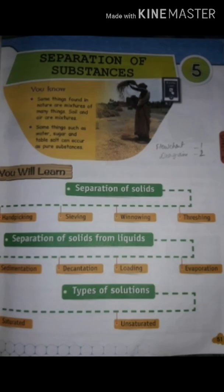Now let's start with our new chapter — Chapter 5: Separation of Substances. In this chapter, you will learn about separation of solids. There are 4 methods: first is hand picking, second is sieving, third is winnowing, and fourth is threshing.